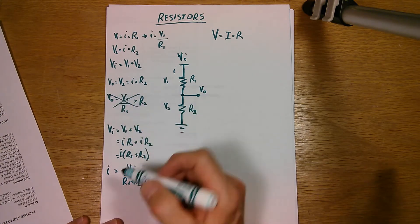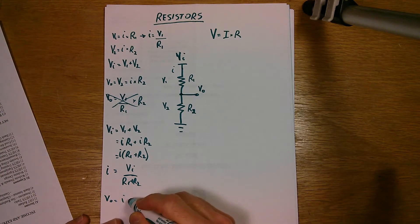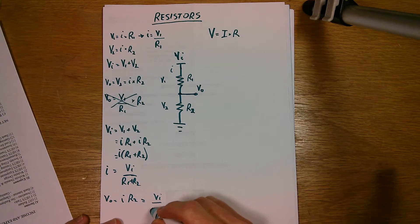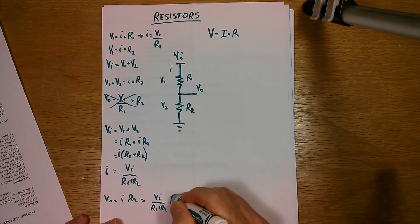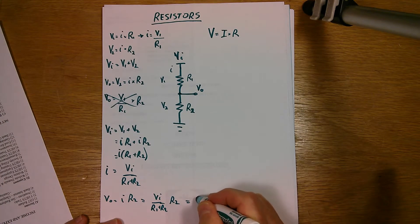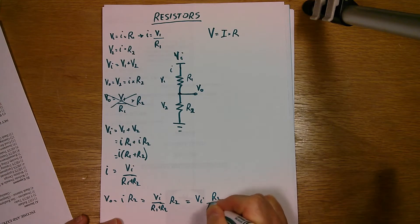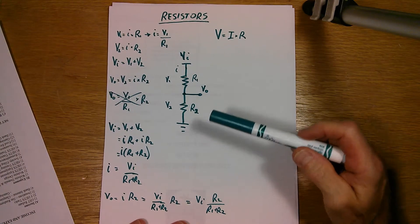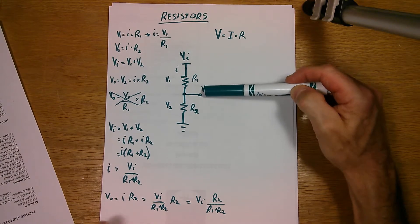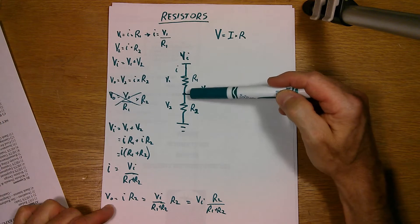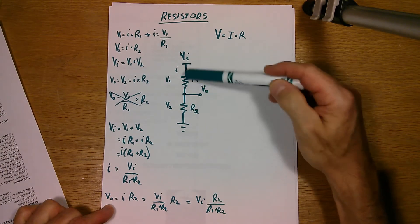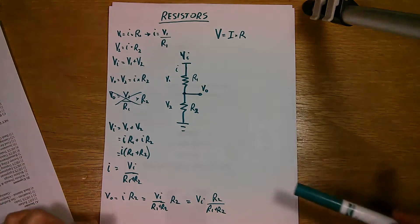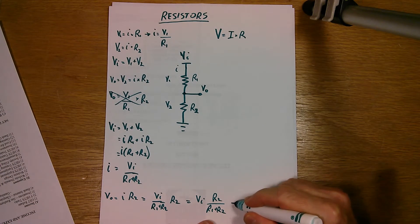And taking this equation here, V_out equals I times R2. And I'll substitute for I here. So I get V_in over R1 plus R2 times R2. And rewriting that, we get V_in R2 over R1 plus R2.